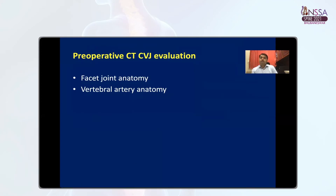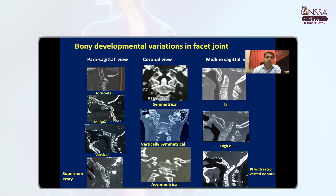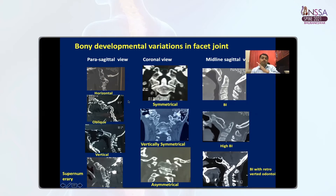Before coming to the surgical part of BI, two most important things which should be evaluated preoperatively in every case are facet joint anatomy and vertebral artery anatomy. In every congenital case, the bony developmental variation occurs at the facet joint level. Both sides of the facet joint should be compared in the parasagittal view and in the coronal view. In normal patients, it lies horizontally in the parasagittal view and at 45 degrees — flat and symmetrical. As BI progresses, it becomes oblique to sometimes vertical, and sometimes it is supernumerary.